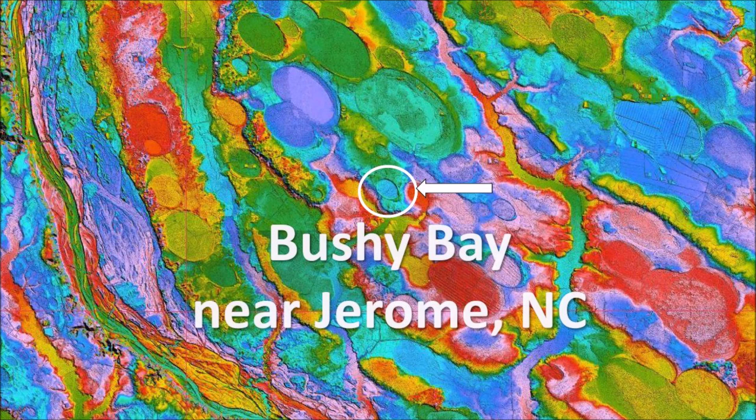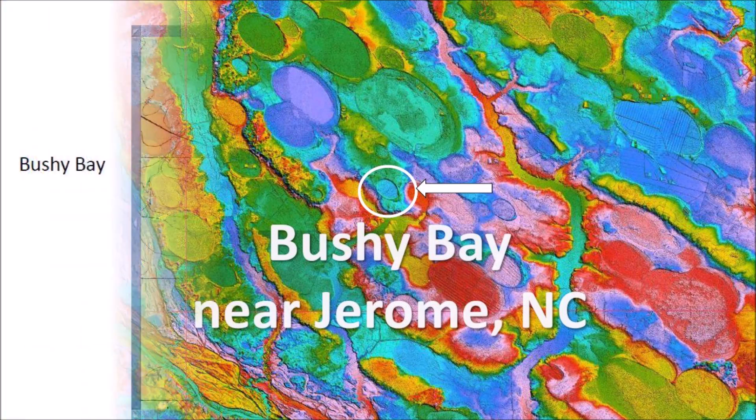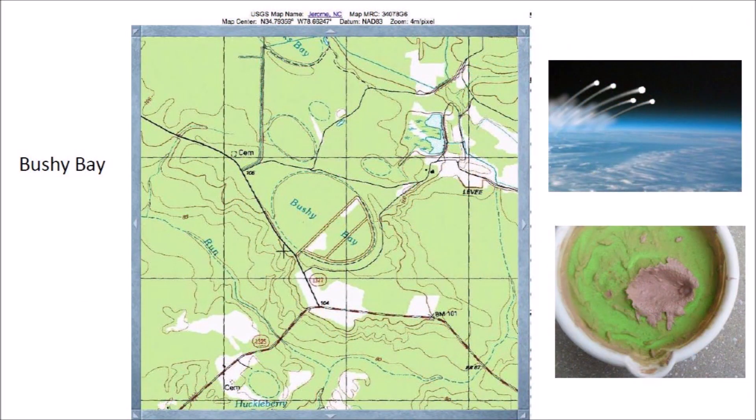Bushy Bay should not be confused with the much larger Bushy Lake Bay, which is located 10 kilometers to the north. Welcome to another edition of the Carolina Bay of the Day, where we study the secondary impacts made by the glacier ice boulders that were ejected by an extraterrestrial impact on the Laurentide Ice Sheet.